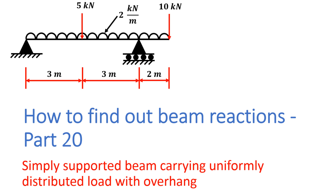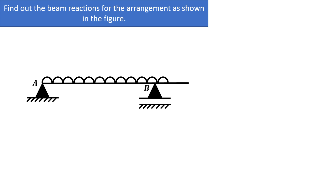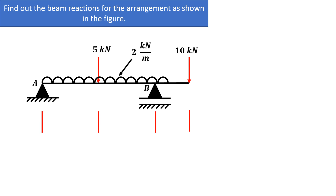In this video we'll try to understand how to find beam reactions in case of a simply supported beam carrying a uniformly distributed load and having an overhang on the right hand side as shown. The beam is supported at A and B, carrying a UDL of 2 kN per meter, a point load of 5 kN, and a point load of 10 kN as shown in the figure with corresponding distances. We have to find the beam reactions at A and B.